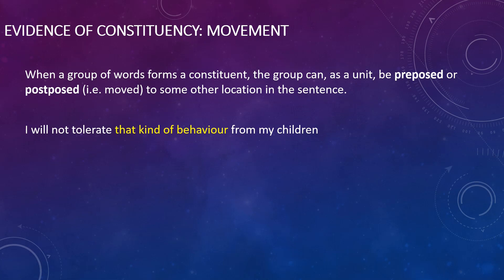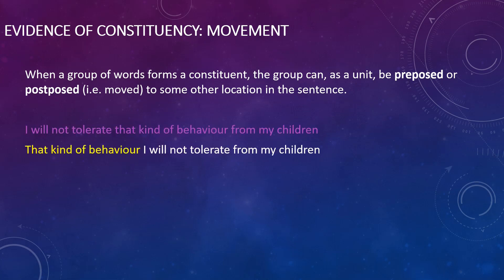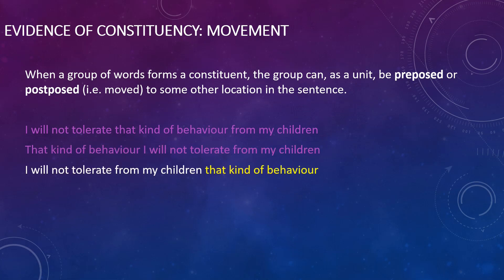By fronting, we move that chunk to the front of the sentence, giving us: 'That kind of behavior, I will not tolerate from my children.' The fact that it can move around shows that it is a constituent. You could also say 'I will not tolerate from my children that kind of behavior' — in this case we have post-posed the chunk, meaning we put it at the end of the sentence. Again, we can see that this chunk tends to move around together, showing it must be a constituent.